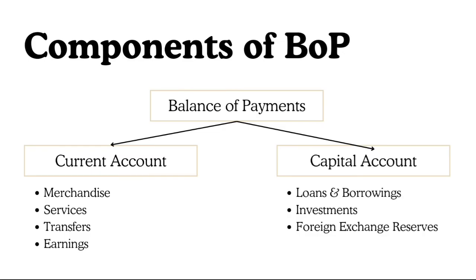BOP is in surplus or in deficit based on the combined result of both current and capital accounts. If both accounts combined show a surplus, BOP is surplus; if deficit, it is deficit. If the current account and capital account cancel each other out, Balance of Payments is said to be in equilibrium. A deficit in the current or capital account alone does not lead to a BOP deficit — it is the combined effect. A surplus in one can be cancelled out by an equal deficit in the other.